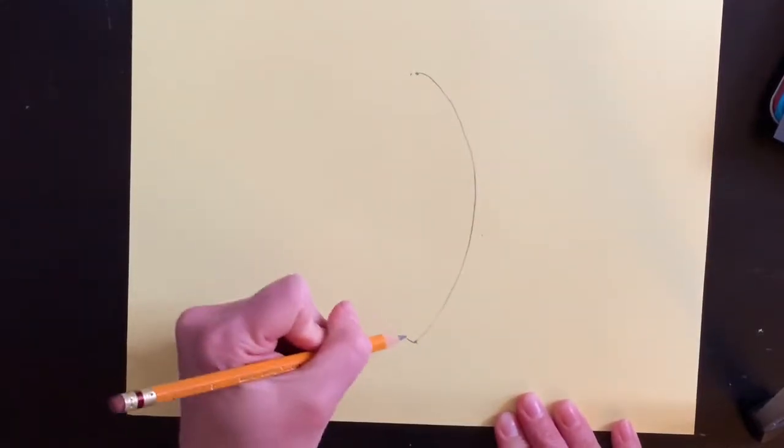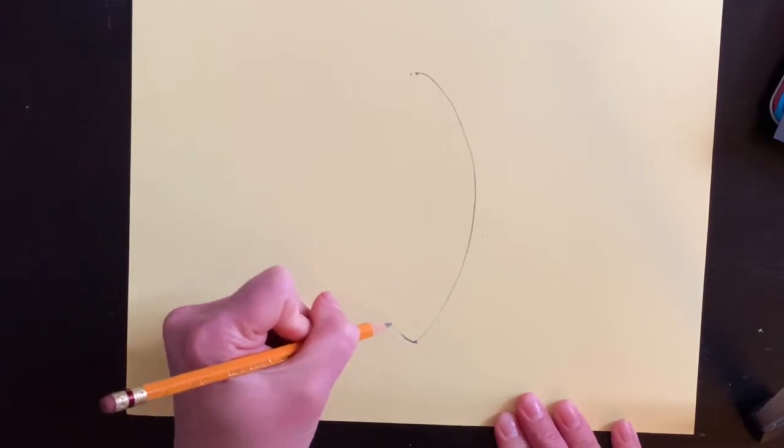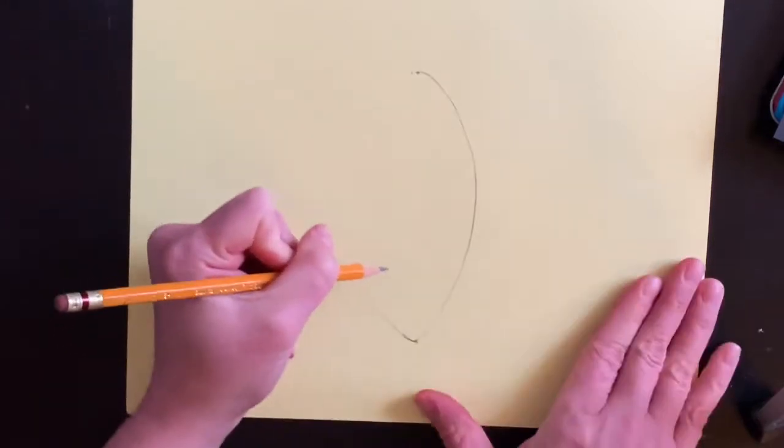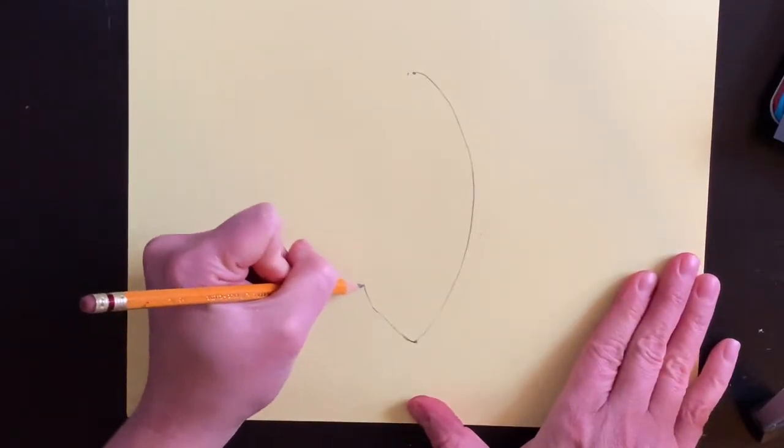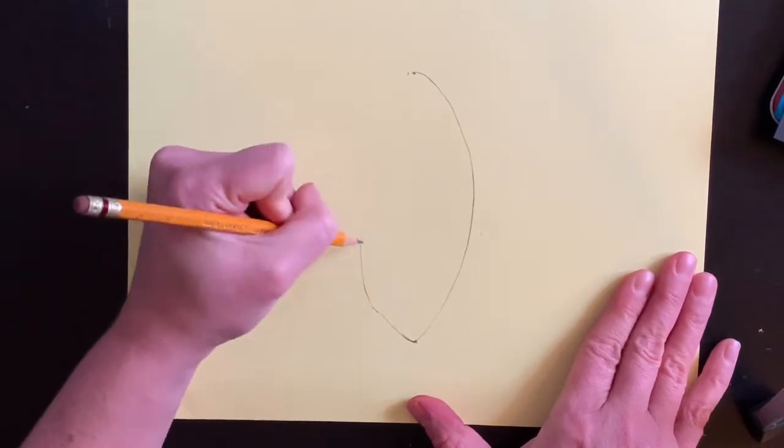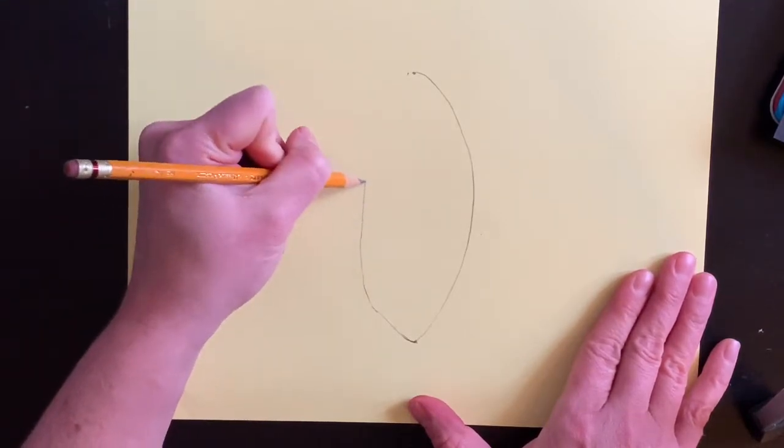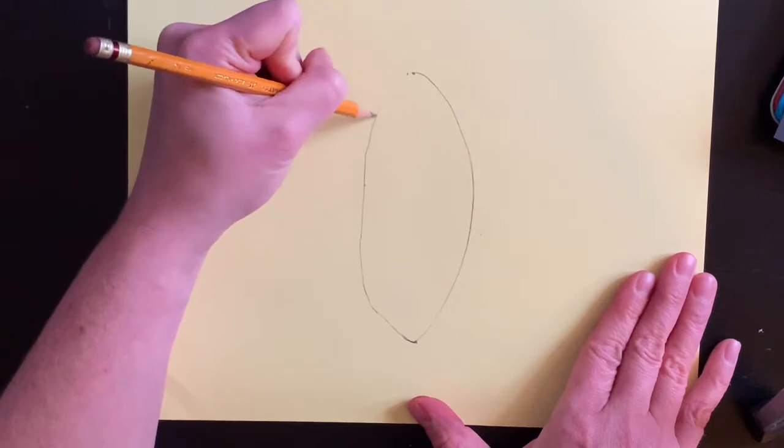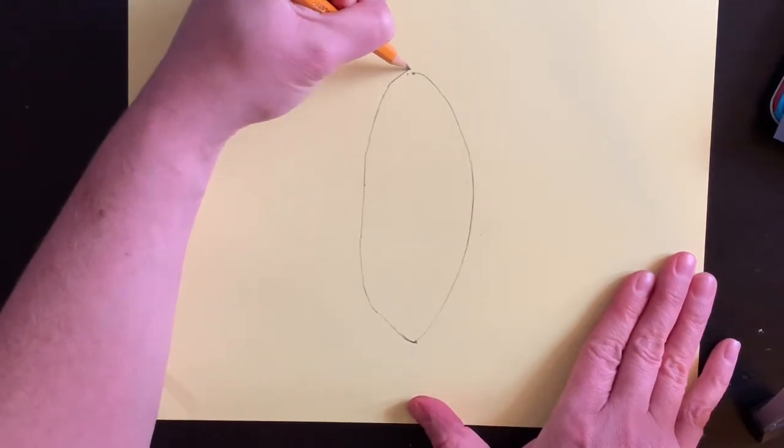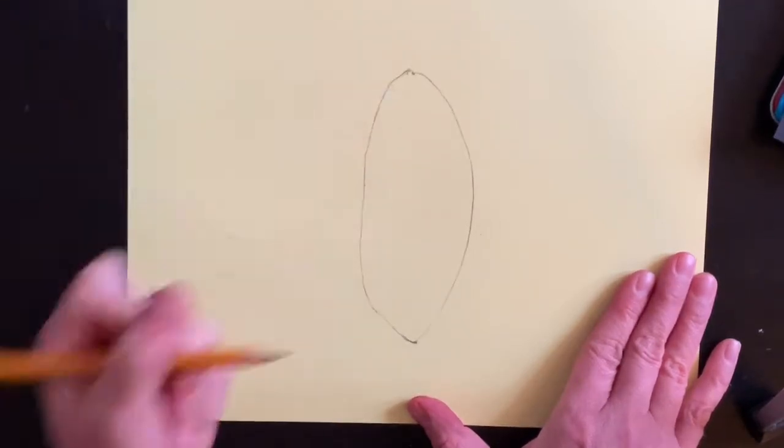Trying to draw light because I don't want to make any thick dark lines if I want to erase them. So then you kind of do a curved line like that.